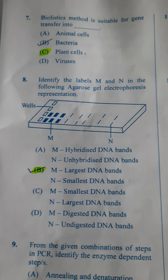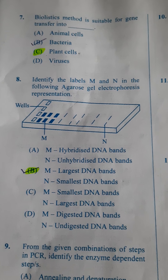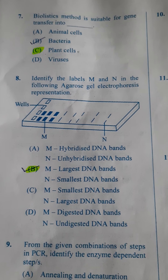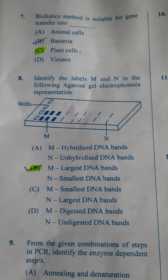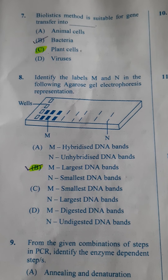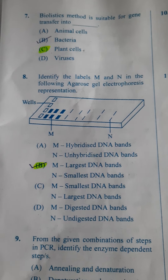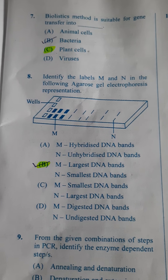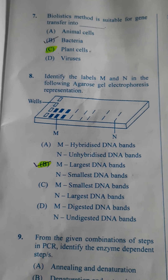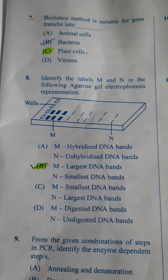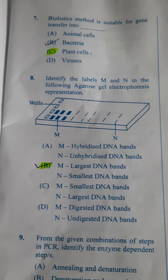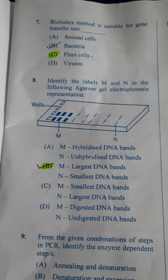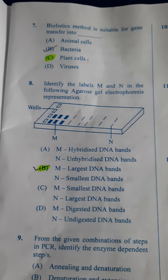Next one: Identify the labels M and N in the following agarose gel electrophoresis representation. In this diagram, M represents the largest DNA bands. Through the pores the smaller ones will be moving, and N represents the smallest DNA band. So the answer here is B.